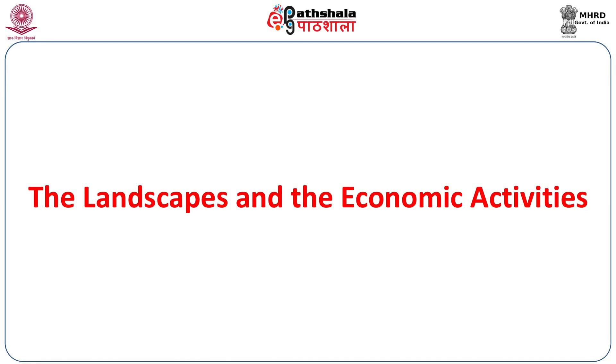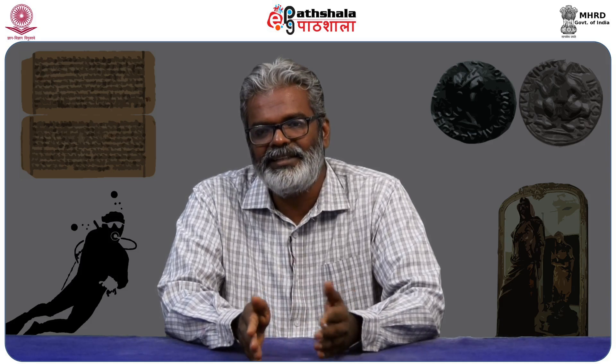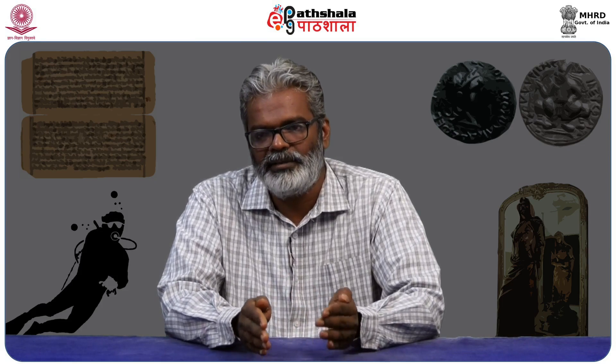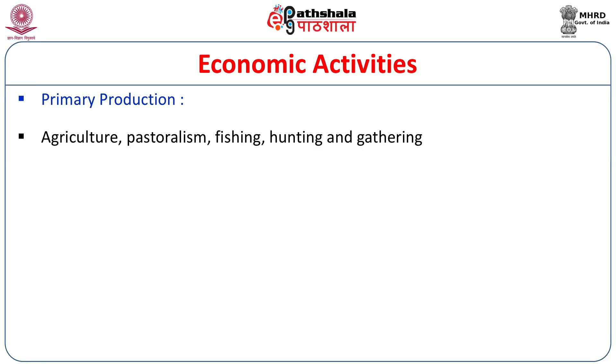The landscape and economic activities of the early historic period are described in elaborate detail by Sangam literature. The poems use a classification called Thinais — five different landscapes: Kurunji, Marudam, Mullai, Neidhal, and Palai. Ancient Tamil Nadu was classified into these five landscapes, each with a predominant economy. Evidence exists for primary production, crop production, and commercial activities both inland and overseas, including agriculture, pastoralism, fishing, hunting and gathering across the various ecozones.